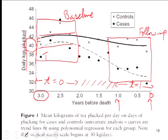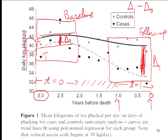So one answer is they look pretty parallel. If we do buy that there are parallel trends, then there's like a little bit of a difference at baseline — that's delta 0. When we get to the end, we have a larger difference — delta 1. The difference-in-difference effect is delta 1 minus delta 0. That's why it's called difference in differences. Visualizing this way makes difference in difference a little more concrete.